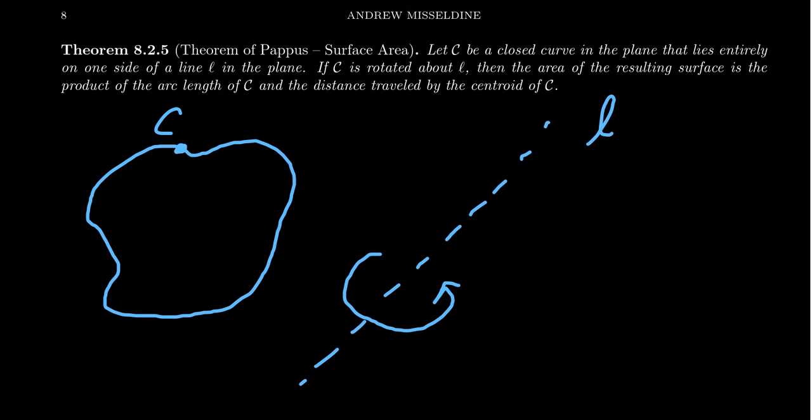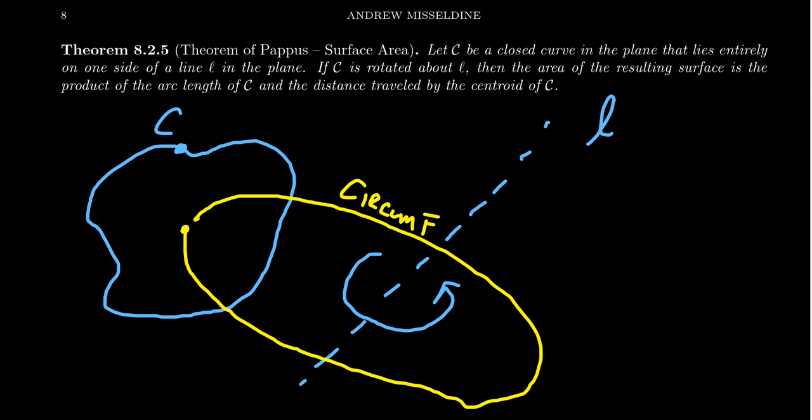What we mean by that is if you take the centroid, which might look something like this, it's going to travel some circular distance around this axis right here. Let's look at the circumference of that thing.